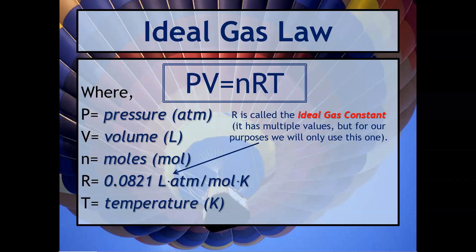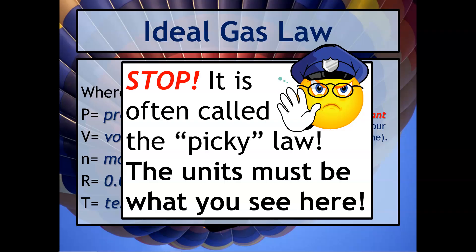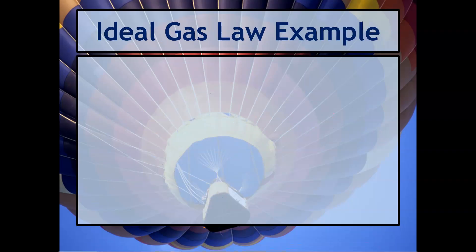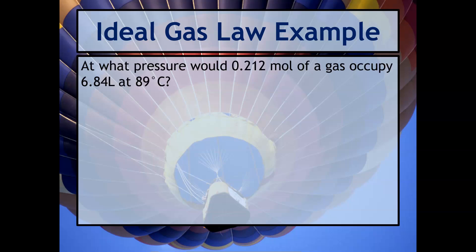There are different values for the ideal gas constant relating kilopascals or millimeters of mercury, but to make things easier we usually focus on the one that incorporates ATM. This is often called the 'picky law' — the units have to match the ideal gas constant exactly, or you're going to run into problems.